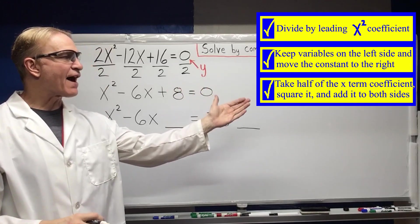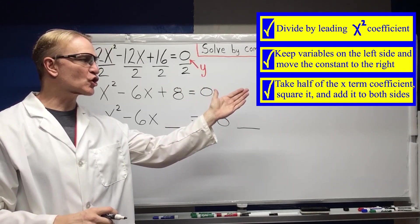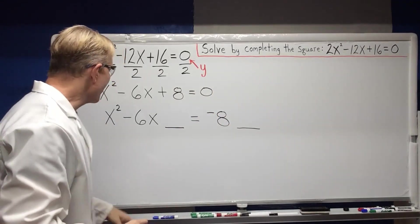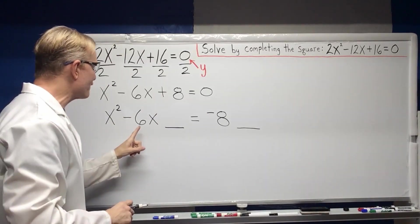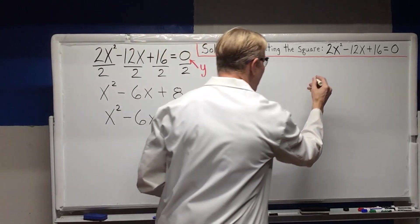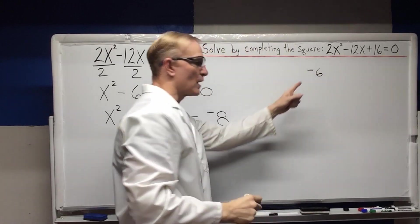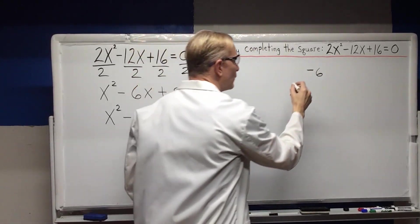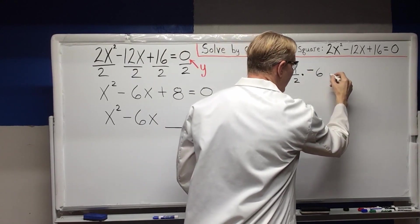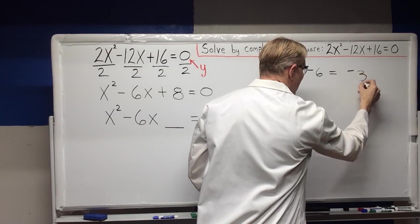Next step, take half of the X term coefficient, square it and add it to both sides. The X term coefficient is a negative 6. I'm going to bring that over here and take my negative 6. I'm going to take half of it. We can multiply by one half. And that's going to equal negative 3.